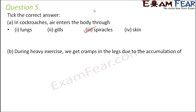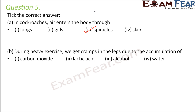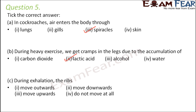During heavy exercise we get cramps in the legs. Due to a lot of energy demand, anaerobic respiration takes place in the muscles of the legs, and as a result lactic acid is formed. The increased concentration of lactic acid causes the cramps. During exhalation, the ribs need to move downwards to contract the thoracic cavity, since we do not need as much space when breathing out.